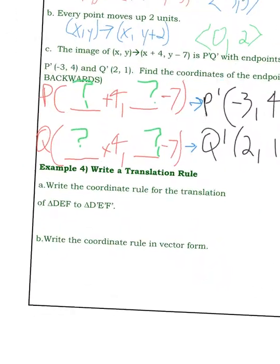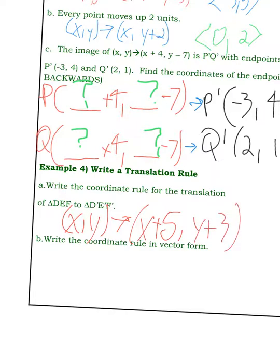So everything went right 5 up 3. So write the coordinate rule for right 5 up 3. X comma Y turns into, or translates to X plus 5, Y plus 3. And write it in vector form. 5, 3. That is a 5. Just take my word for it that that's a 5. And that's it for translations. Thanks.